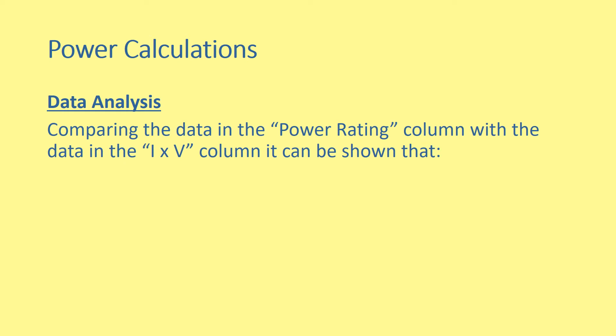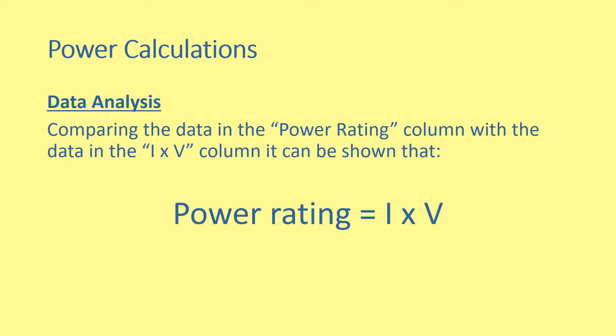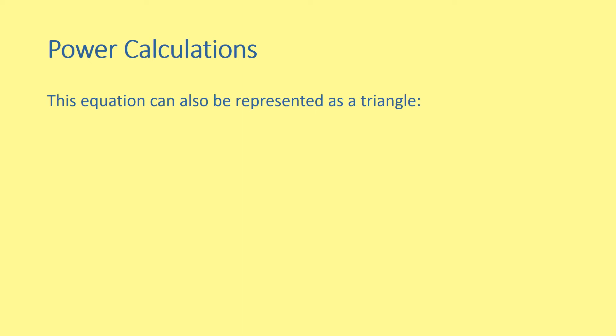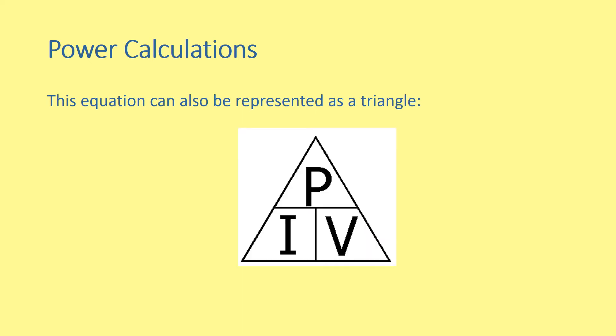Comparing the data in the power rating column with the data in the IV column, it can be shown that the power rating roughly equals current multiplied by voltage, with acceptable power losses. We always need to make sure that our calculations assume there is no energy loss within the circuit. This equation, P equals IV, can also be represented in a triangle with P, I and V. Please take note that this equation appears on the relationship sheet as P equals IV.